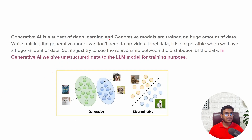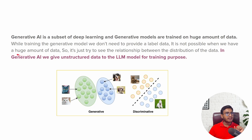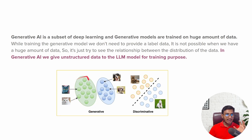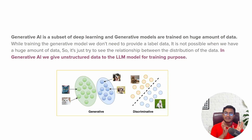In summary, Generative AI is a subset of deep learning and generative models are trained on huge amounts of data. While training, we don't need to provide any labeled data — we only give unstructured input data, because when working with huge amounts of data it's not possible to label everything. The discriminative model predicts whether it's a dog or cat image, while the generative model makes clusters — like a cat cluster and a dog cluster — and generates new content from them. You may have heard of GAN (Generative Adversarial Neural Network), which is also a generative model — you give noise data and it generates new content.